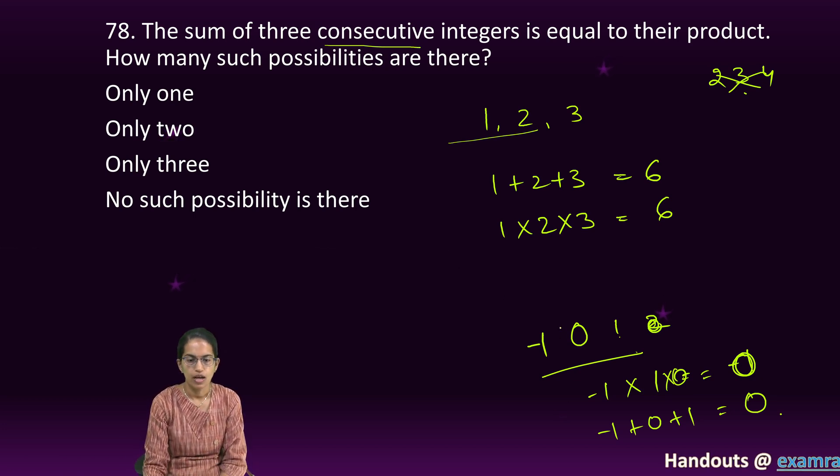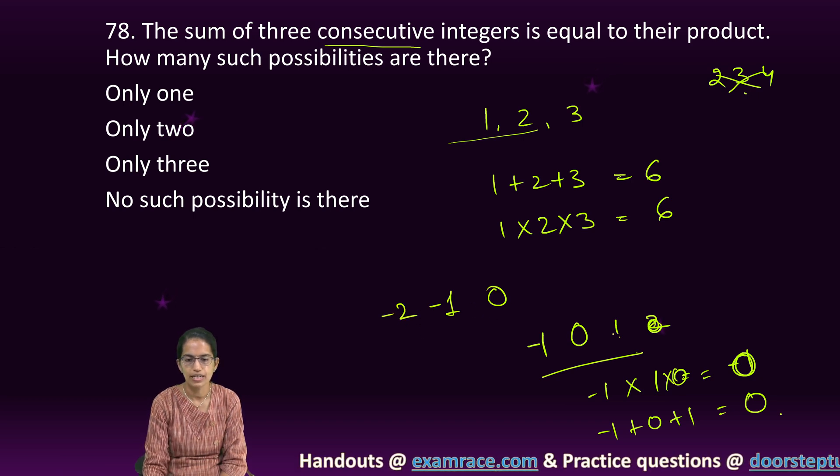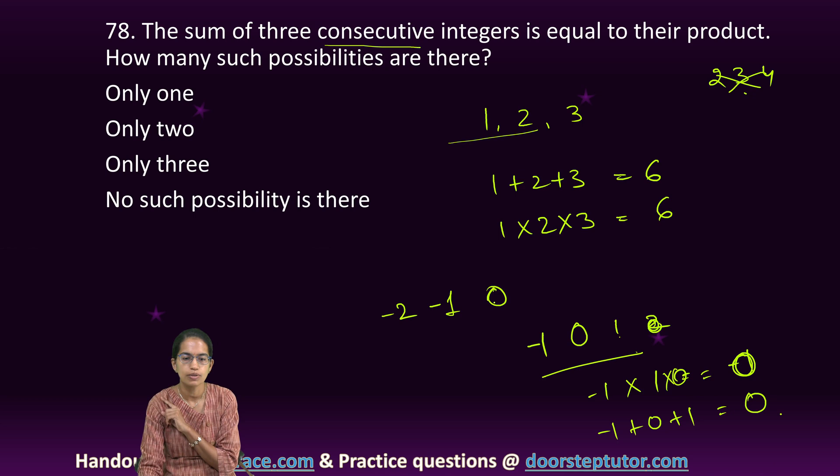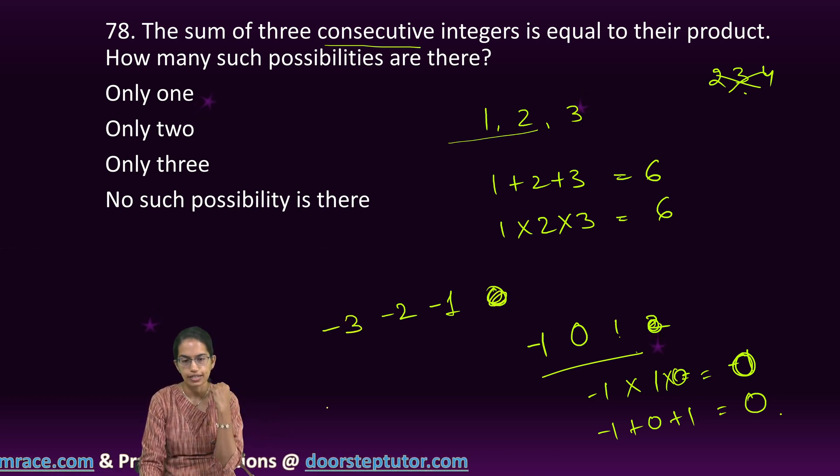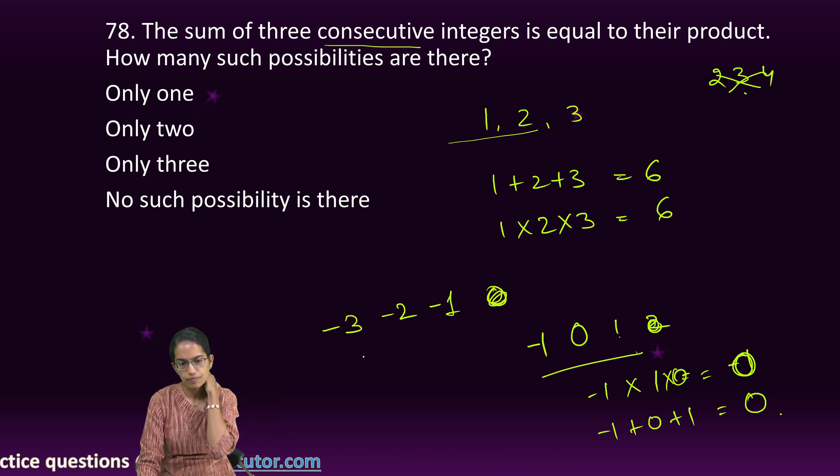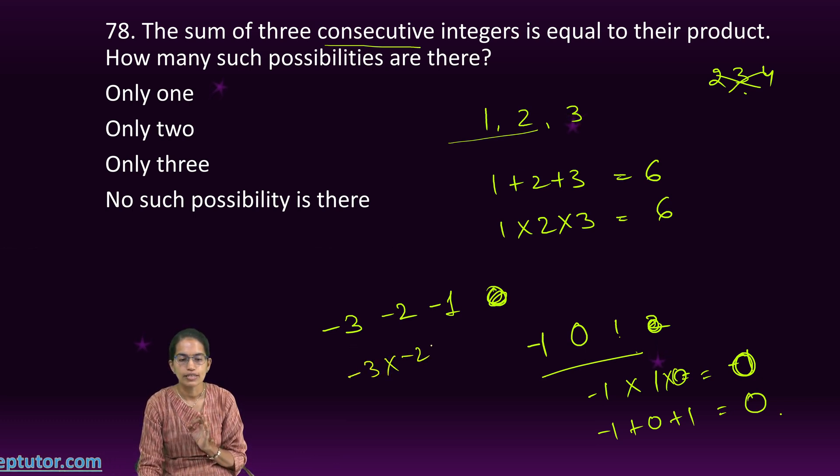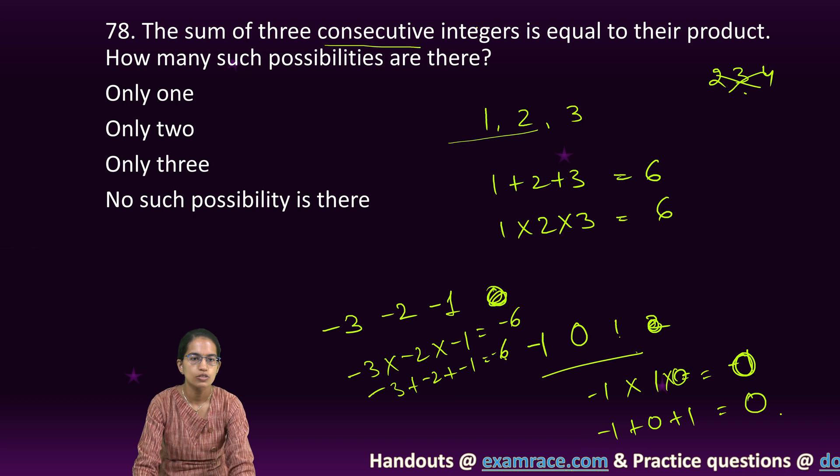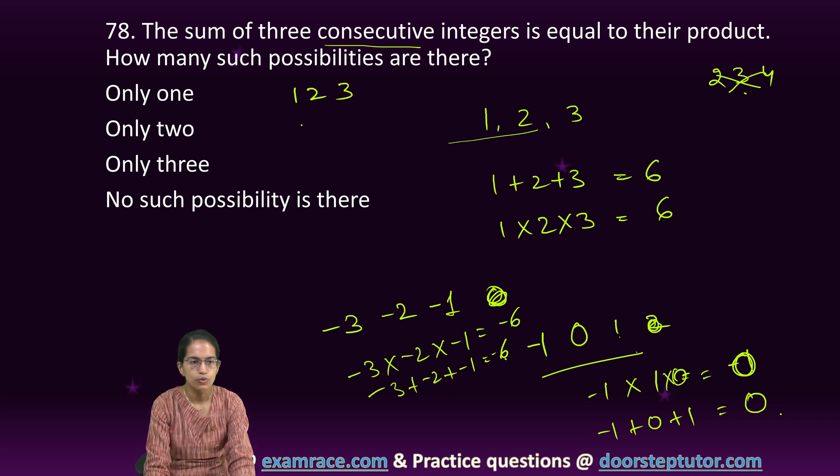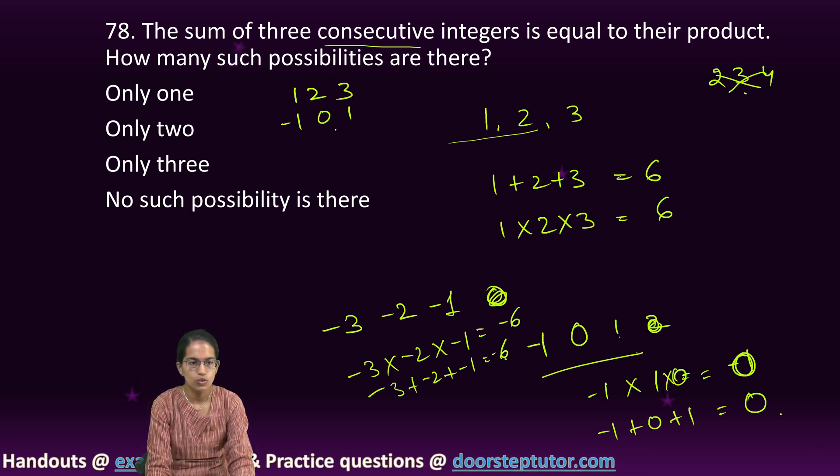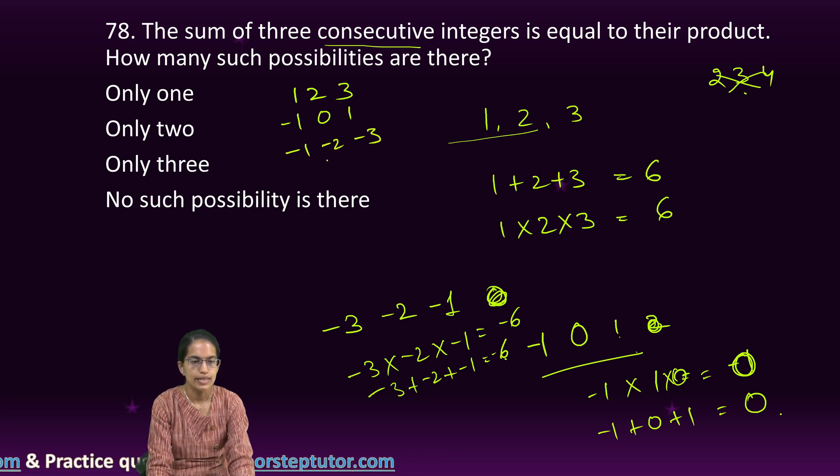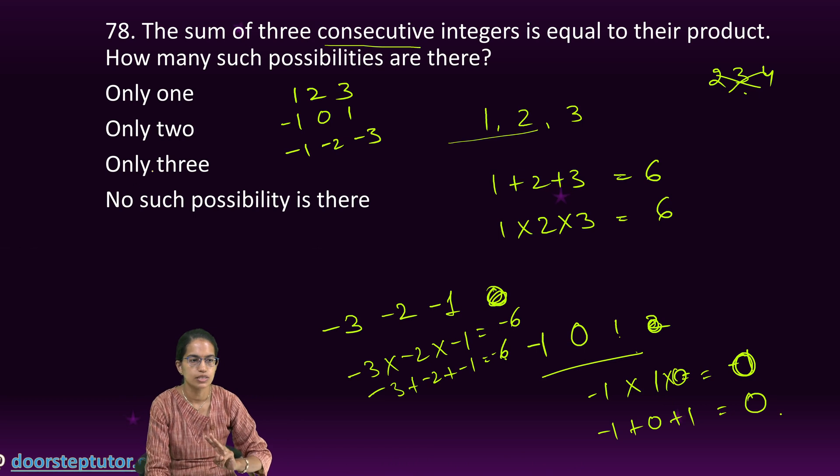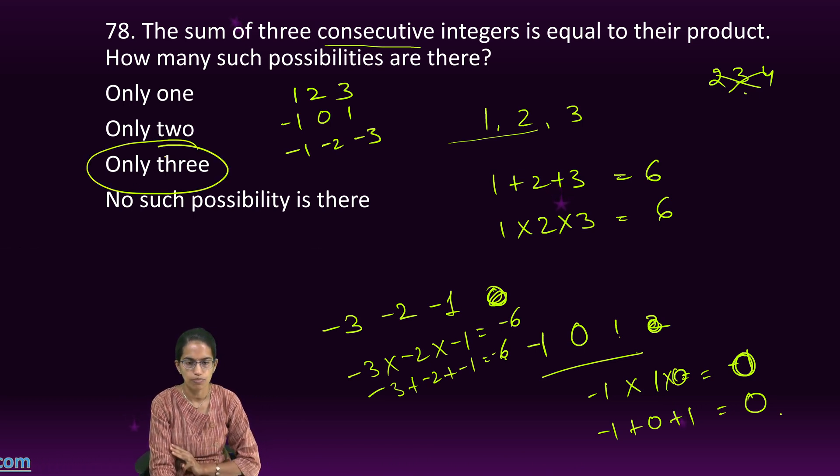Let me do all digits as negative. It becomes minus 3 into minus 2 into minus 1, which is minus 6. Minus 3 plus minus 2 plus minus 1, which is minus 6 again. The same answer. How many possibilities are generated? 1, 2, 3; minus 1, 0, 1; minus 1, minus 2, minus 3. There are 3 possible solutions for this problem.